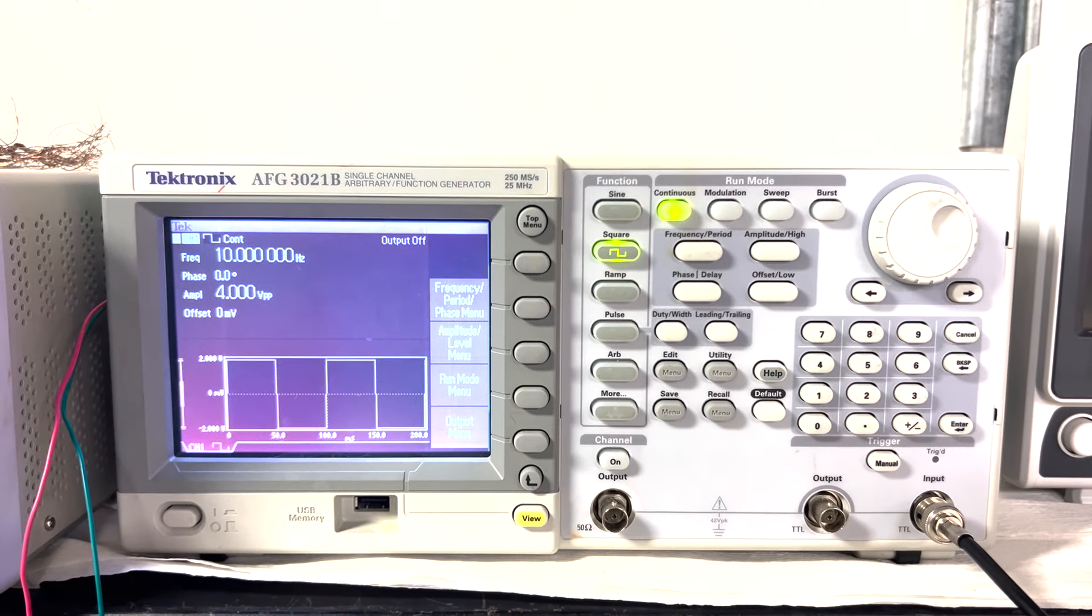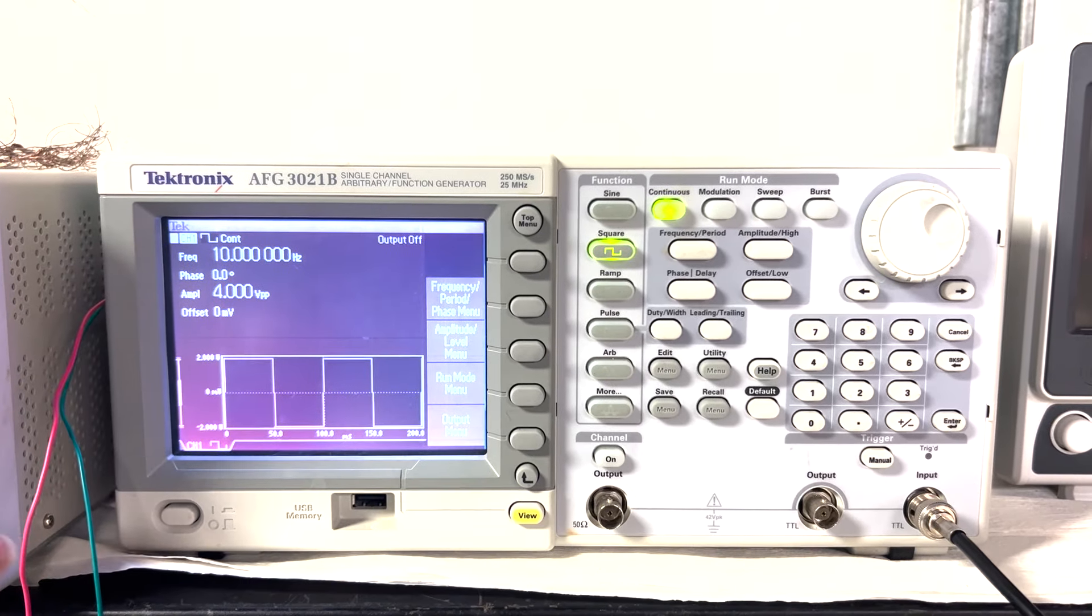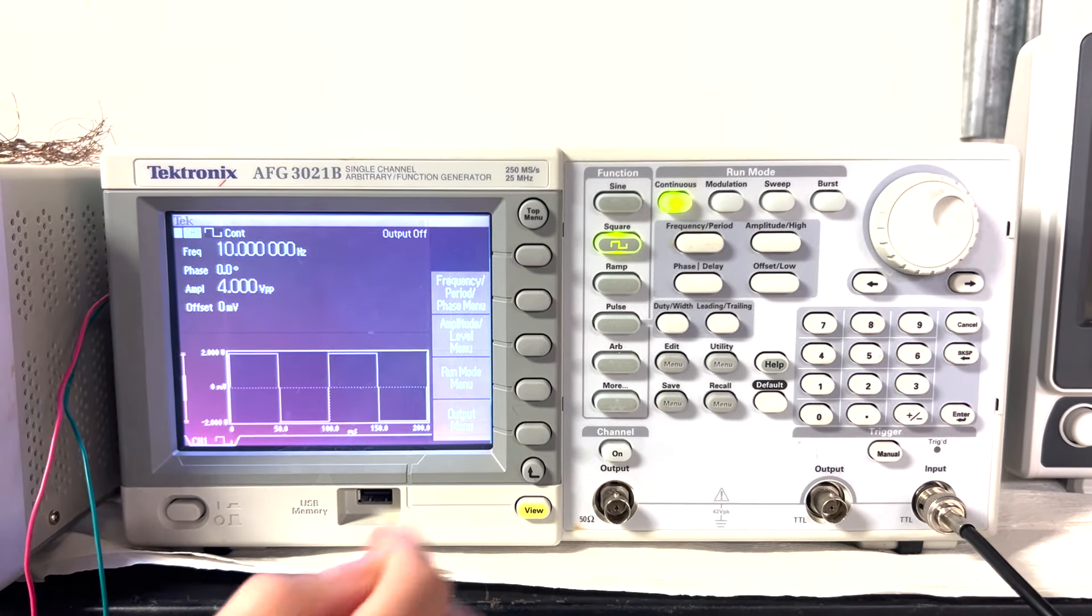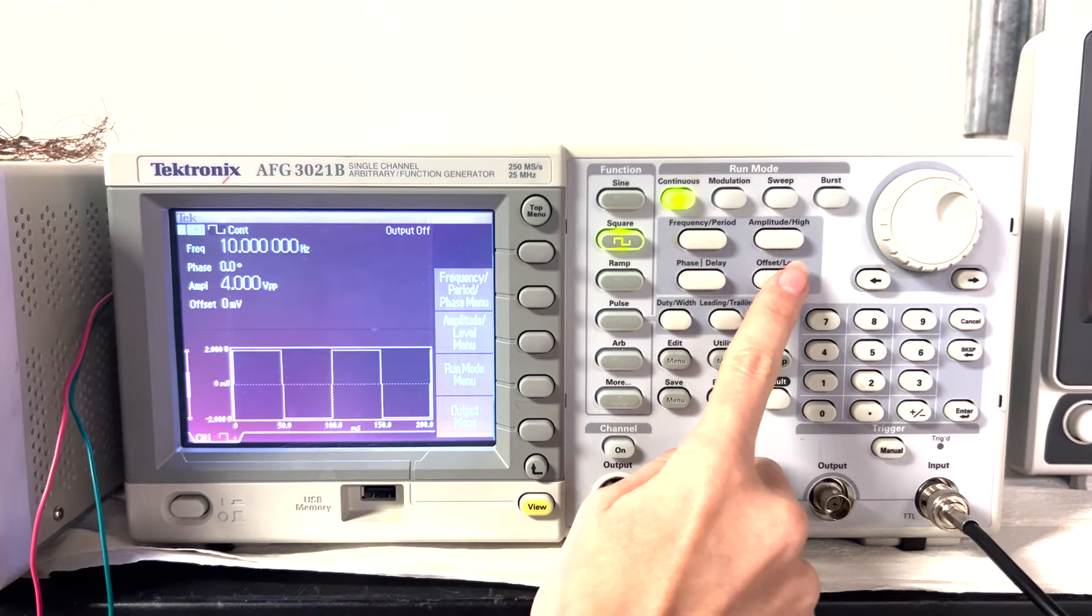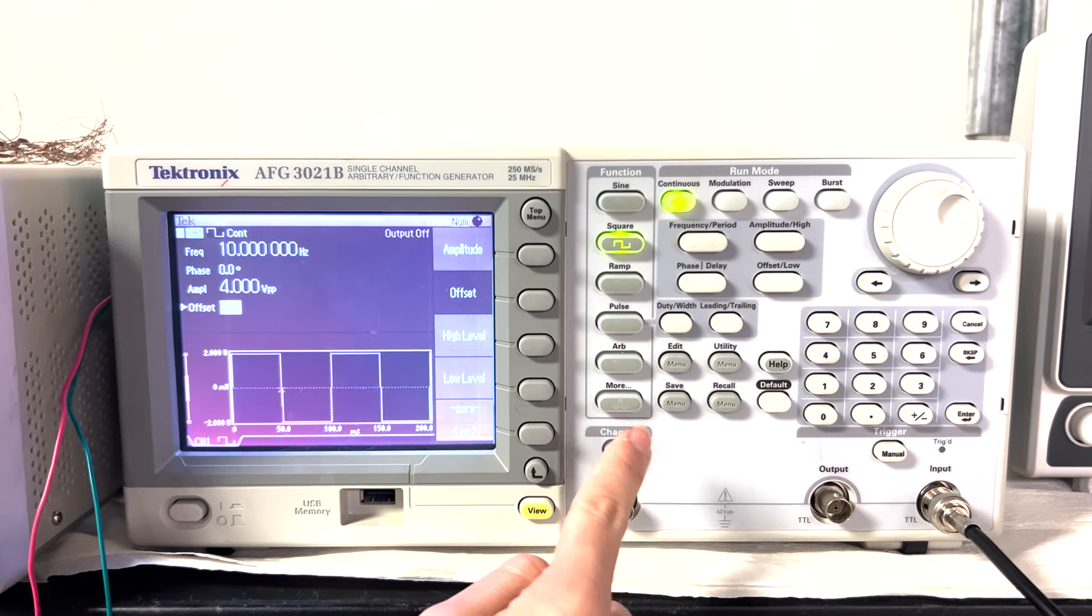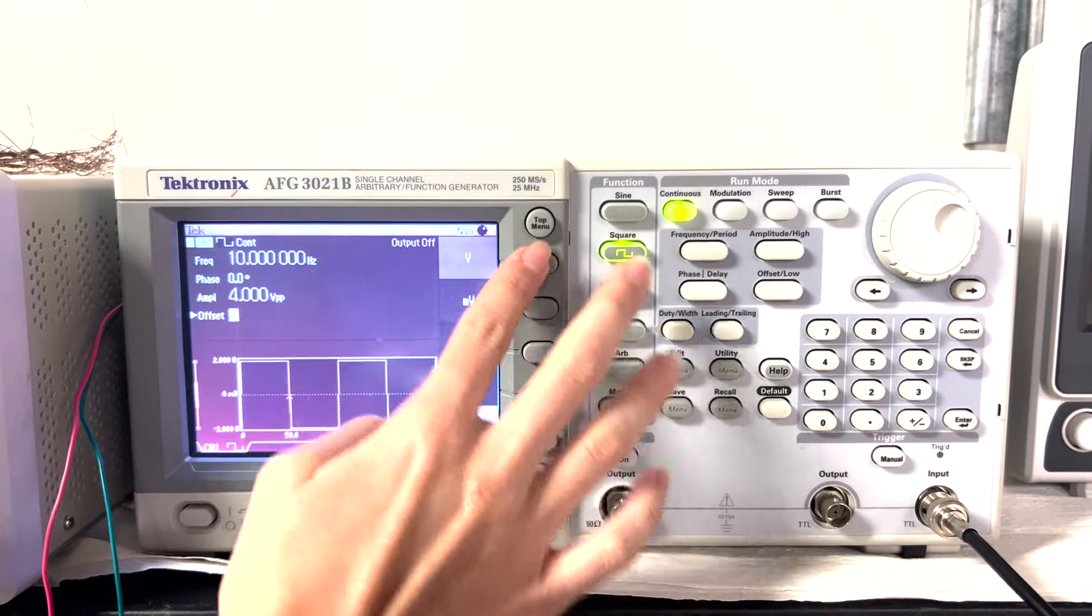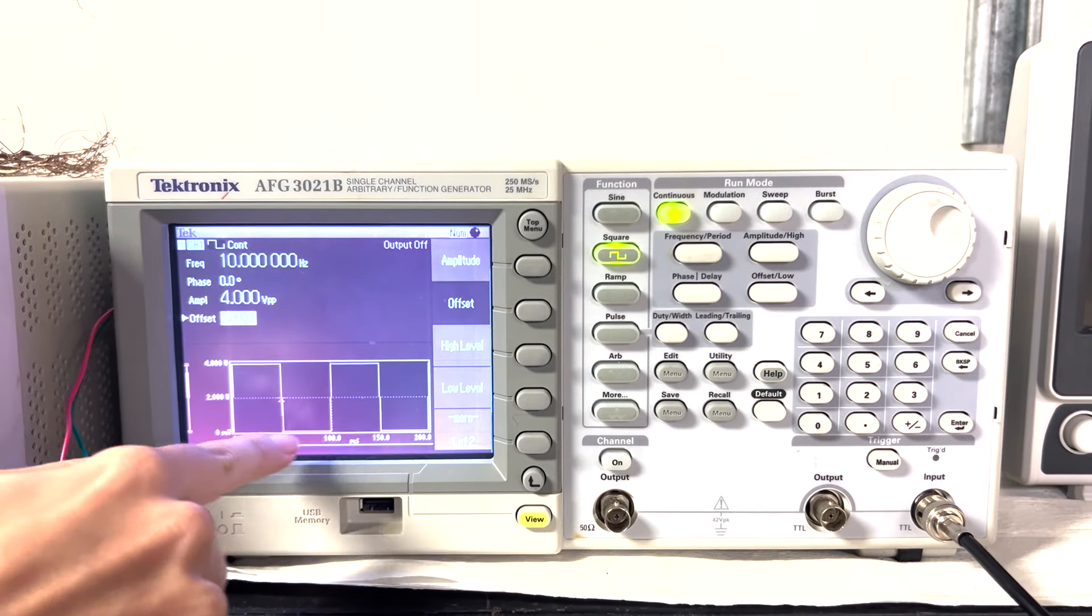So in this case, I'm not going to worry about the offset or the phase. But I will show you how to change it. So here, I select offset. And then I'm going to move it to two volts. And you see how the function changes.